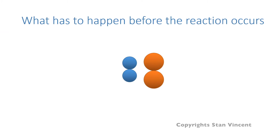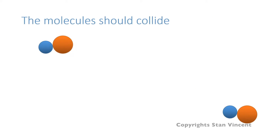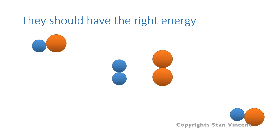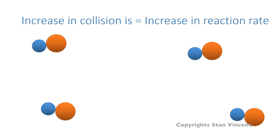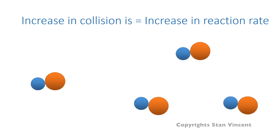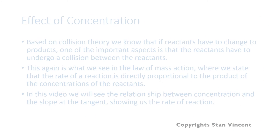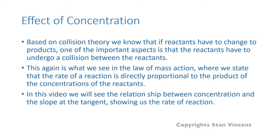What happens before the reaction should happen? There should always be a collision. And if the molecules have the right amount of energy and if they have a proper orientation, the collision should lead to the formation of products. An increase in collision is equal to an increase in the rate of reaction. Collision theory can be used to explain the factors or the rates of reaction. An increase in concentration always increases the number of collisions. This is again stated as the law of mass action, where we state that the rate of a reaction is directly proportional to the product of the concentration of the reactants.